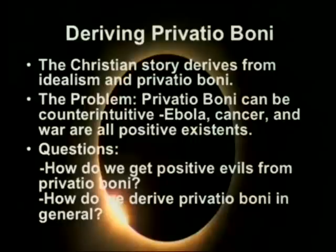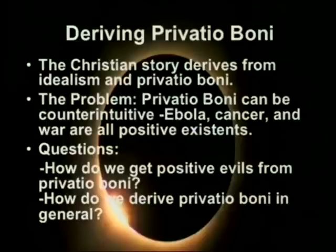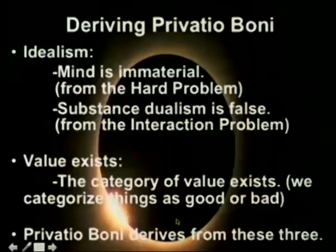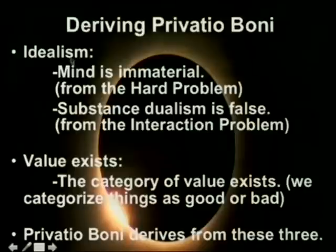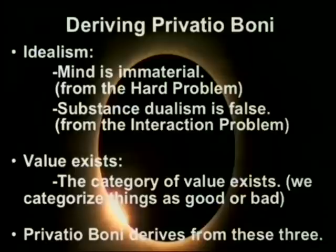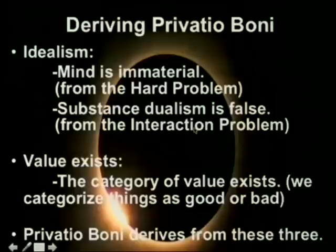So we can get the whole Christian story out of idealism and privatio boni. The big problem now is privatio boni is kind of counterintuitive — evil is an absence of good, but obviously things like Ebola virus, cancer, and war aren't just absences; they actually exist as things with positive existence. The two questions are: number one, how do we get positive evils from privatio boni? And number two, how do we derive privatio boni in general? You need basically three things to derive privatio boni: idealism — which you can get from the mind being immaterial from the hard problem of consciousness; substance dualism is false from the interaction problem; and the category of value exists.